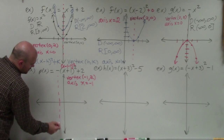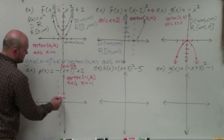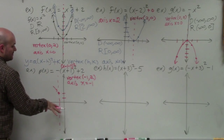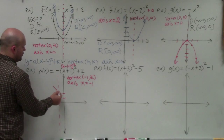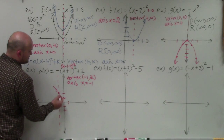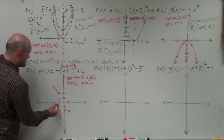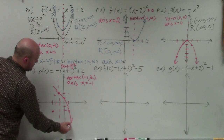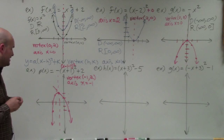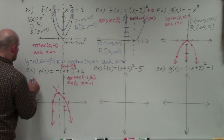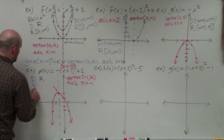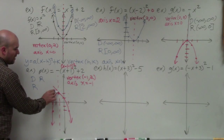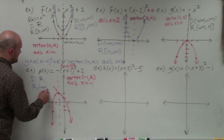I draw the axis of symmetry at x equals negative 1 and plot the vertex at negative 1, up 2. The graph is opening down, so instead of going up, I go over 1, down 1, and over 2, down 4. I reflect those points over the axis of symmetry. Domain is all real numbers. The range goes from negative infinity up to the y-value of 2, so the range is negative infinity to 2 (with a bracket on 2, since 2 is a y-coordinate on the graph).